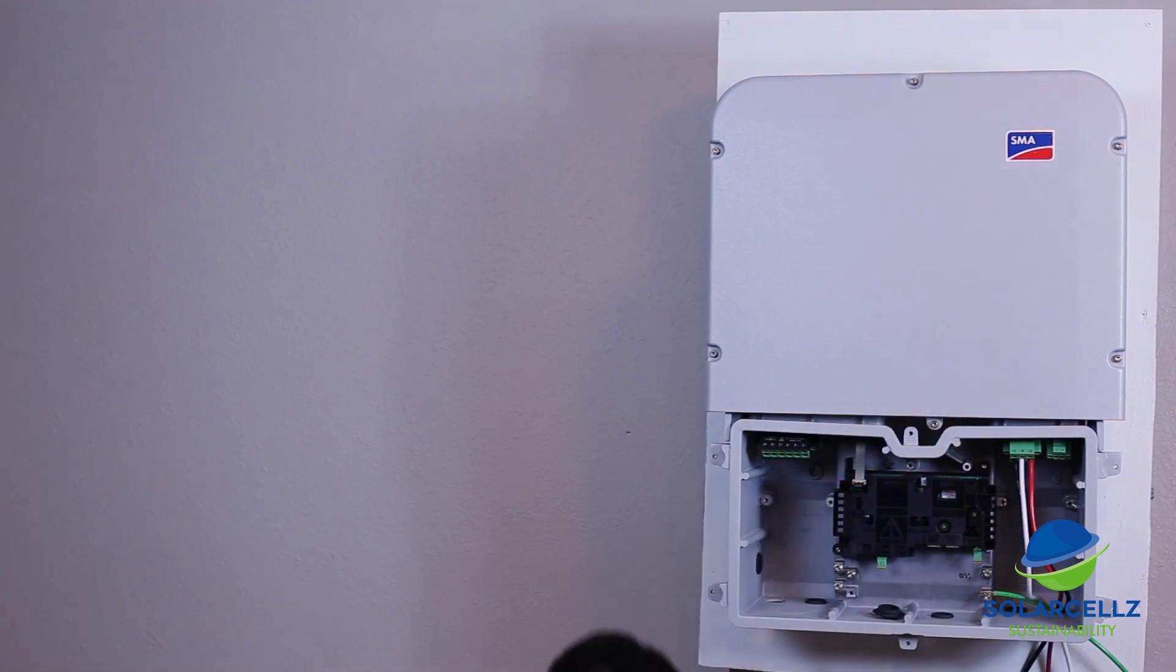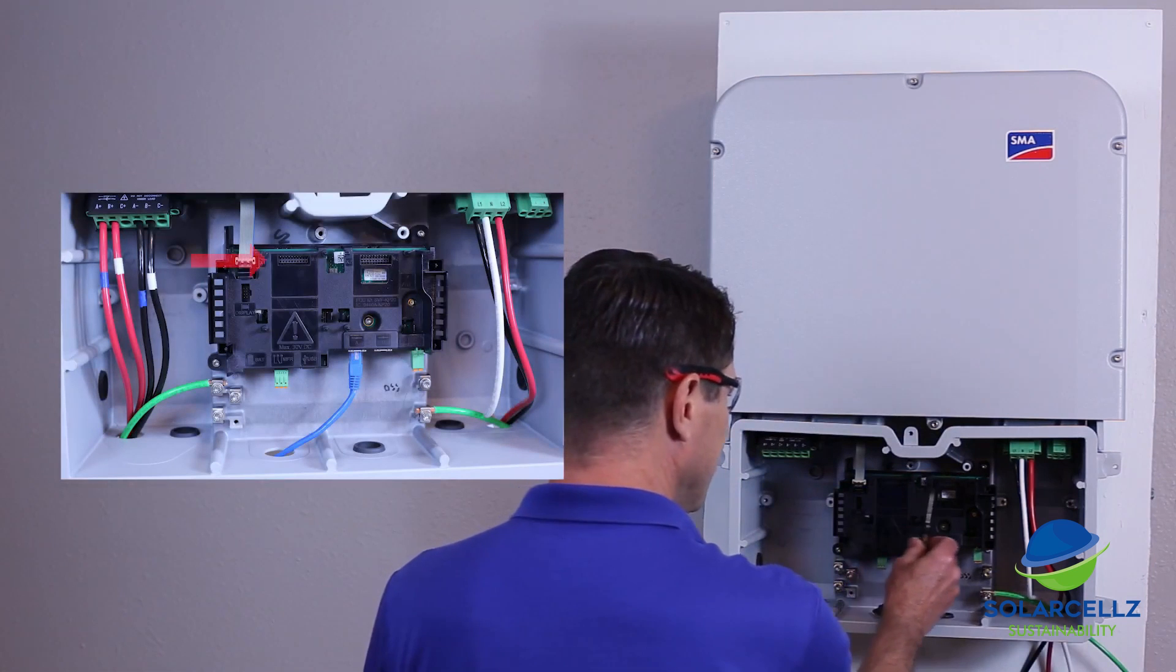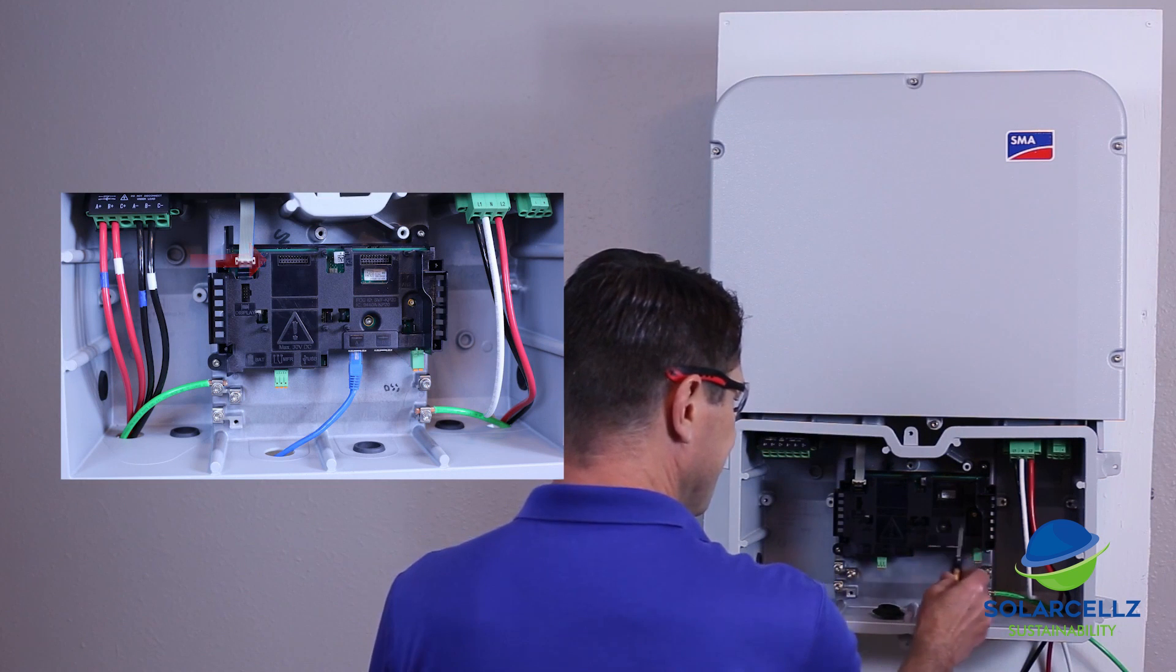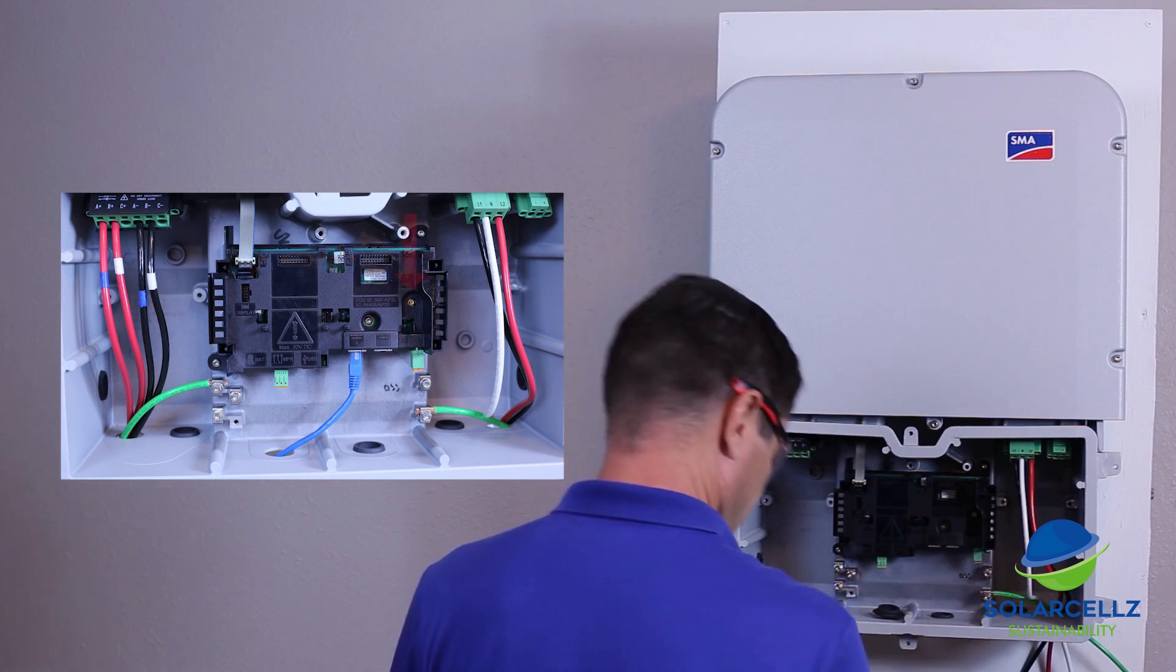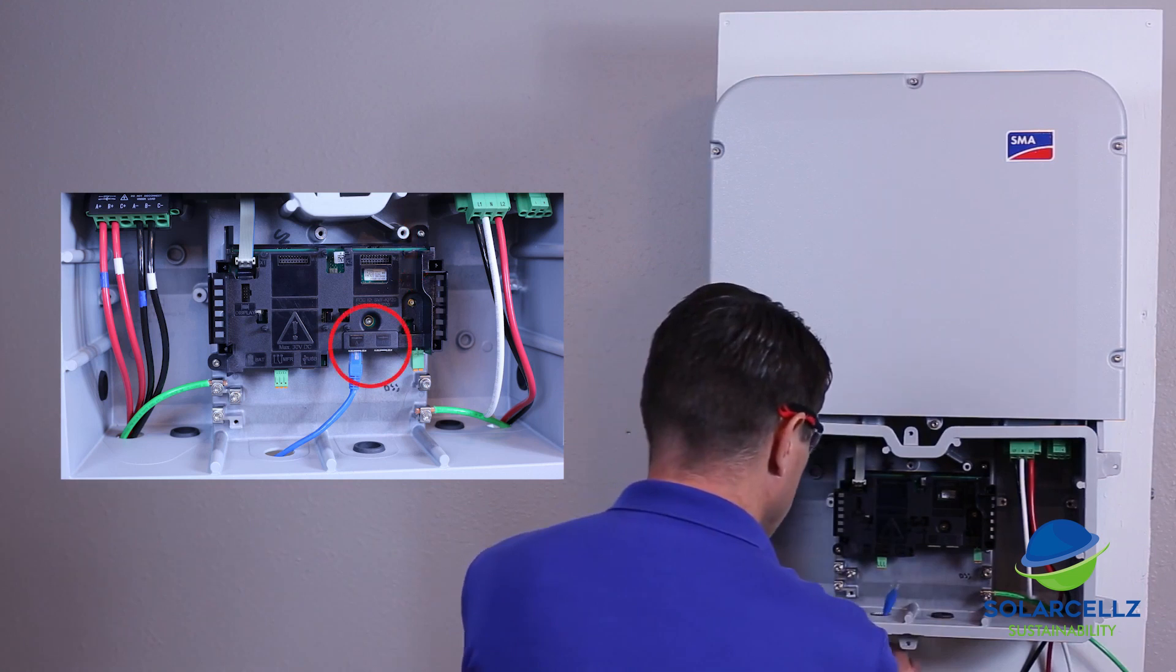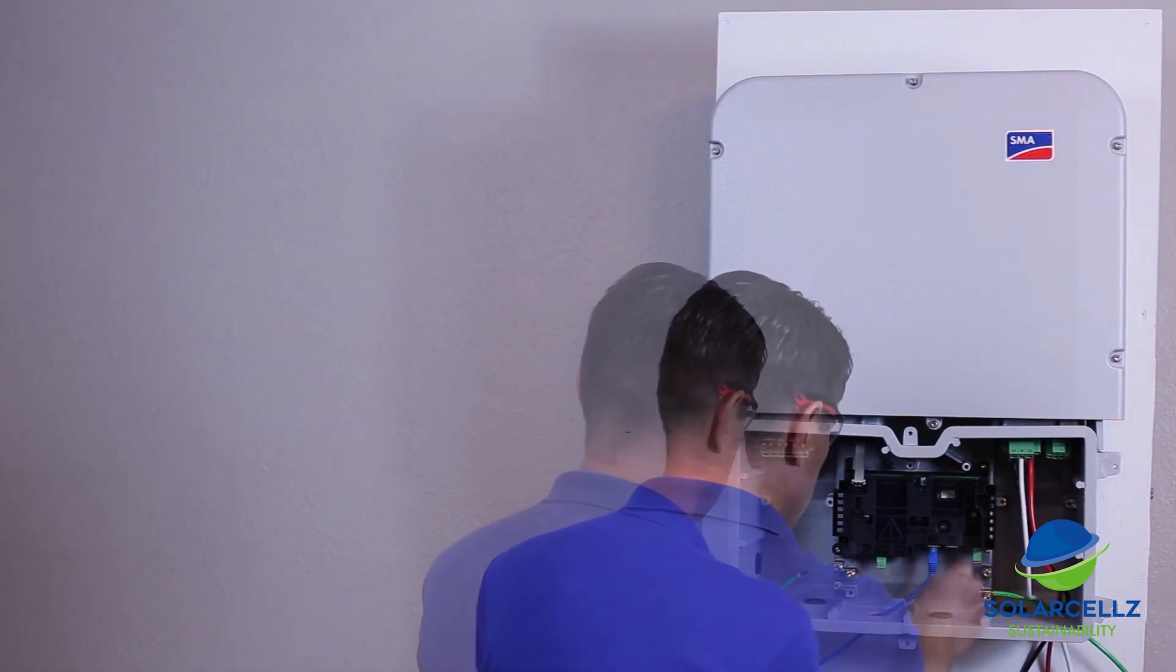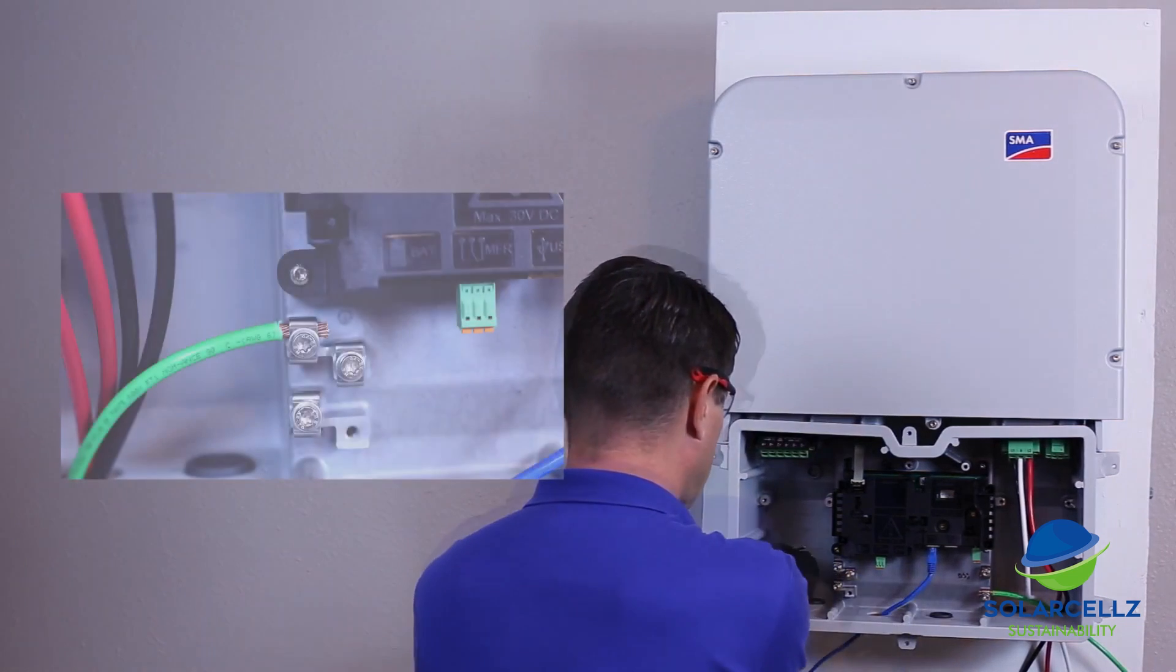Before connecting the DC conductors, any accessories or network cables should be installed. There are two module expansion slots on the communications board, and the connector for the Wi-Fi extension antenna is on the right side of the communications board. There are two RJ45 jacks for wired Ethernet communications as well.